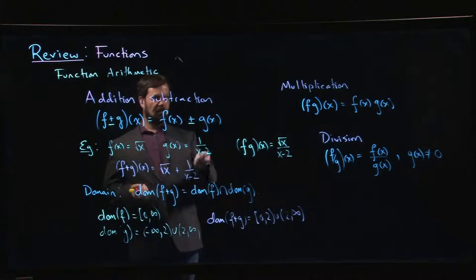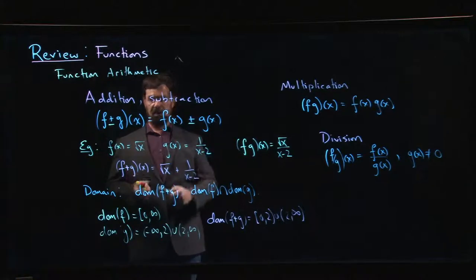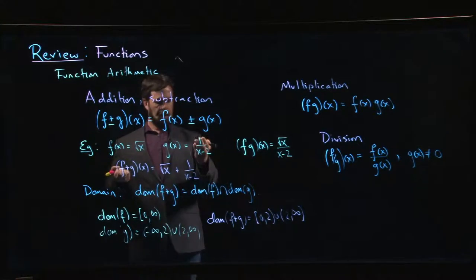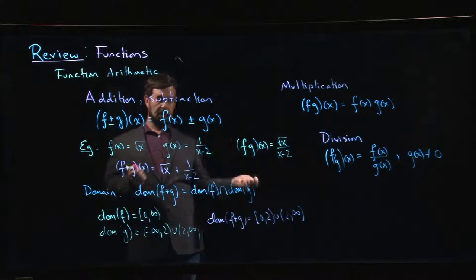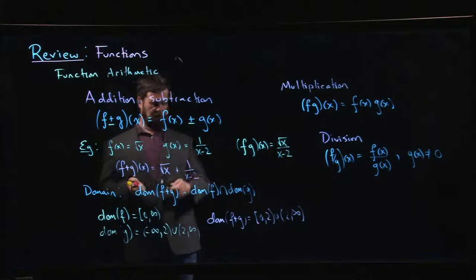So maybe this function g of x, we could think of this as having come from the constant function 1 and the linear function x minus 2. Both of those have domain all real numbers. But when I divide those two functions, the one in the denominator has a 0, and so that 0 needs to be removed from the domain. So 2 is not part of the domain.